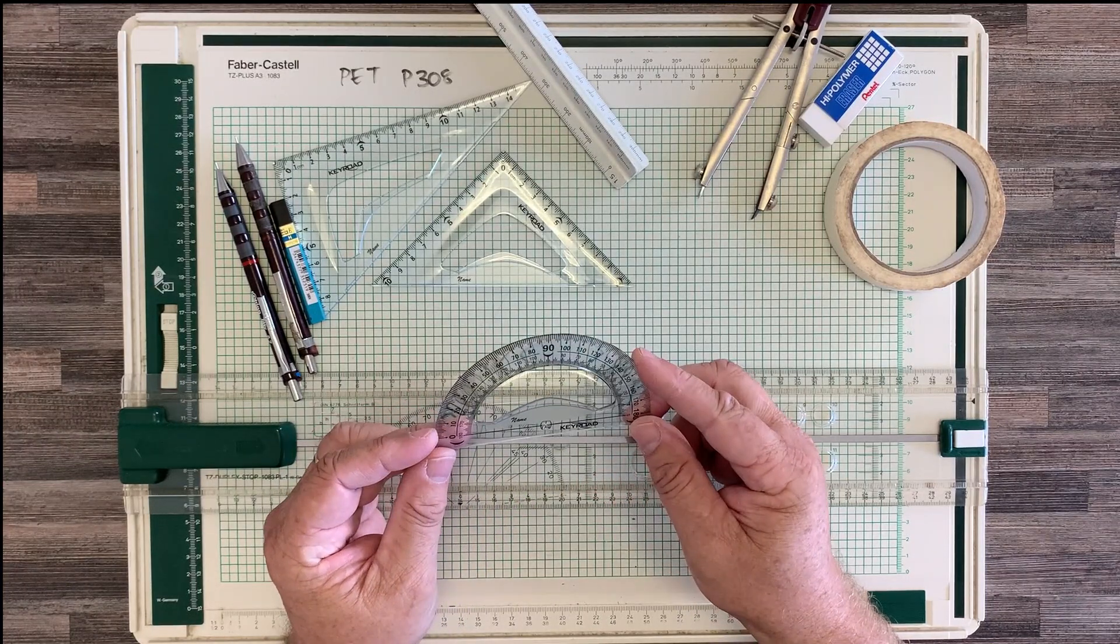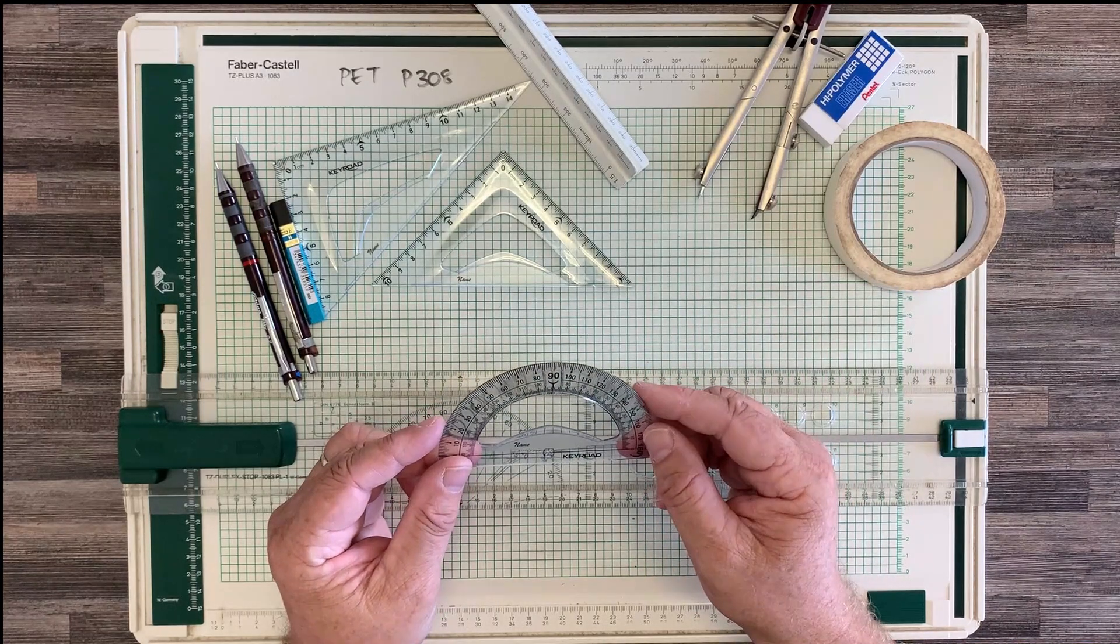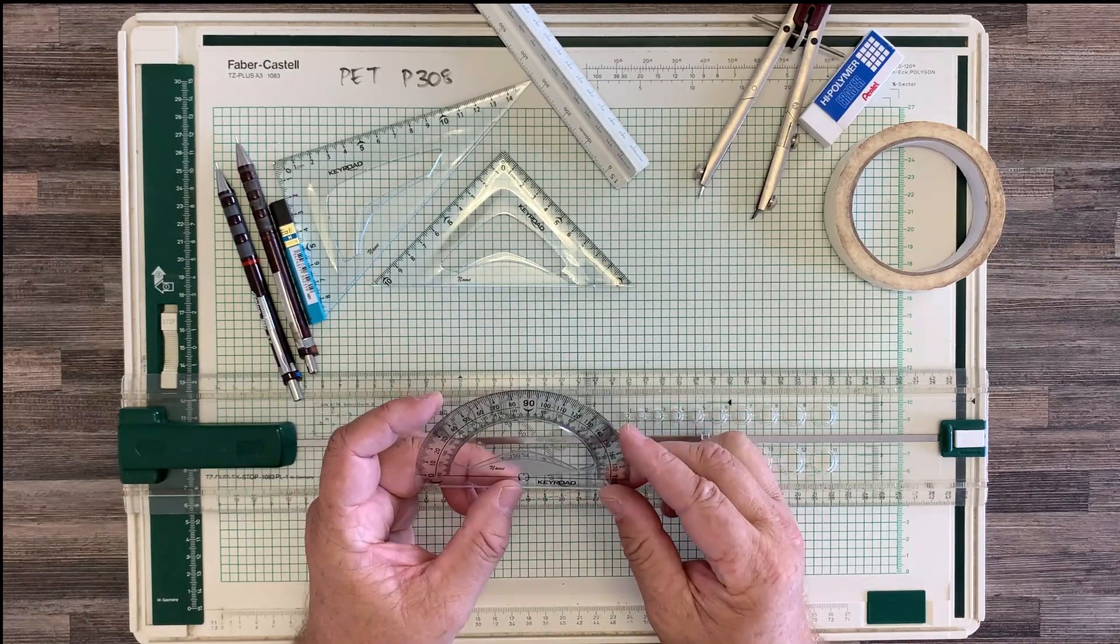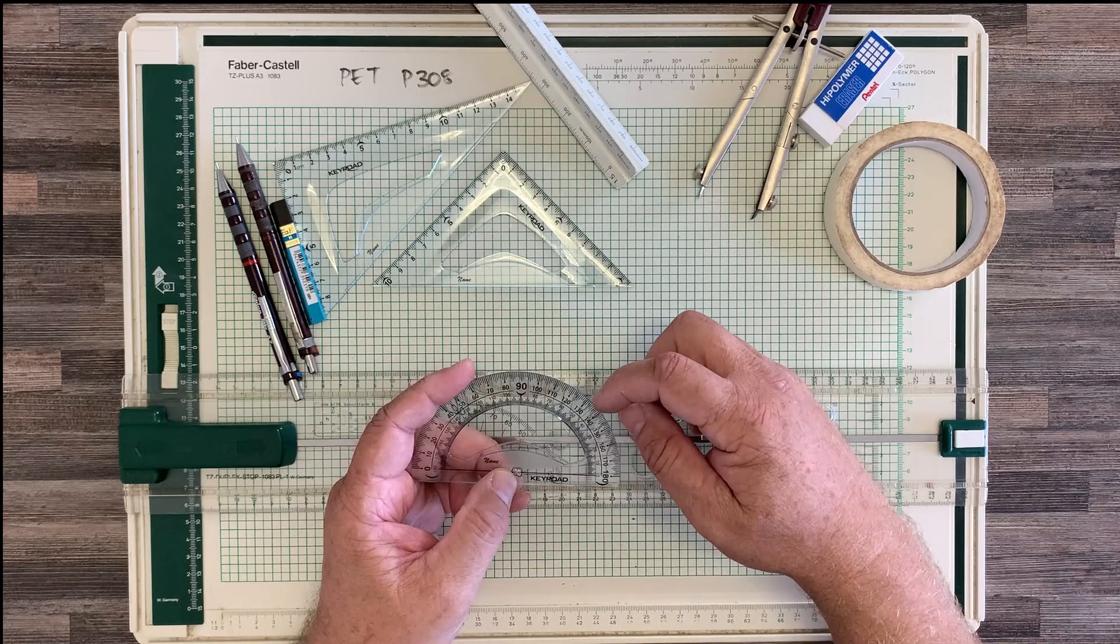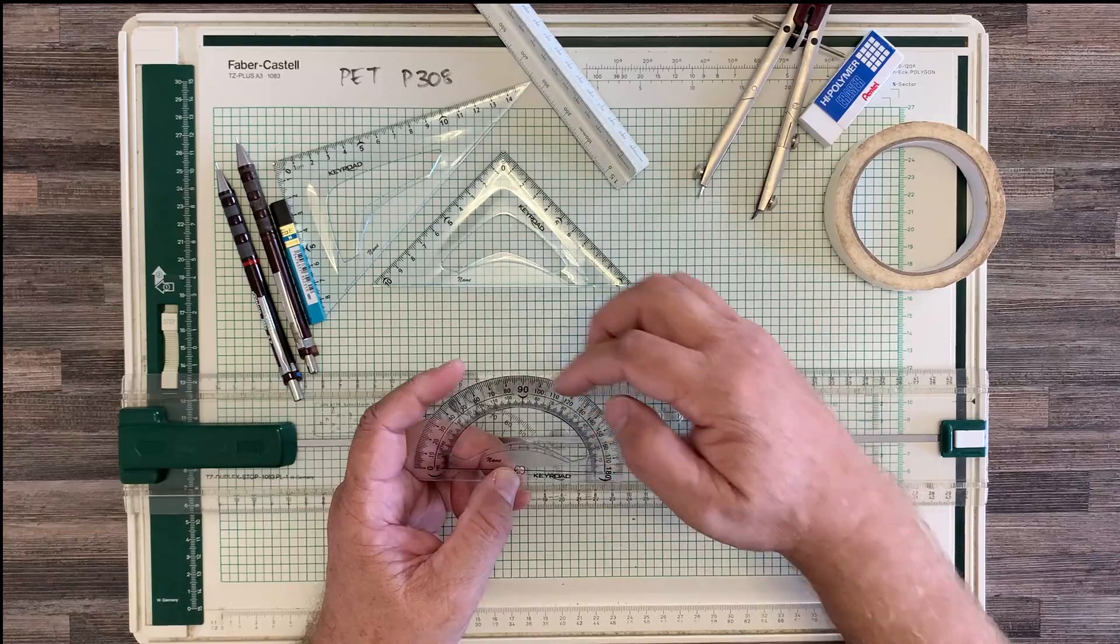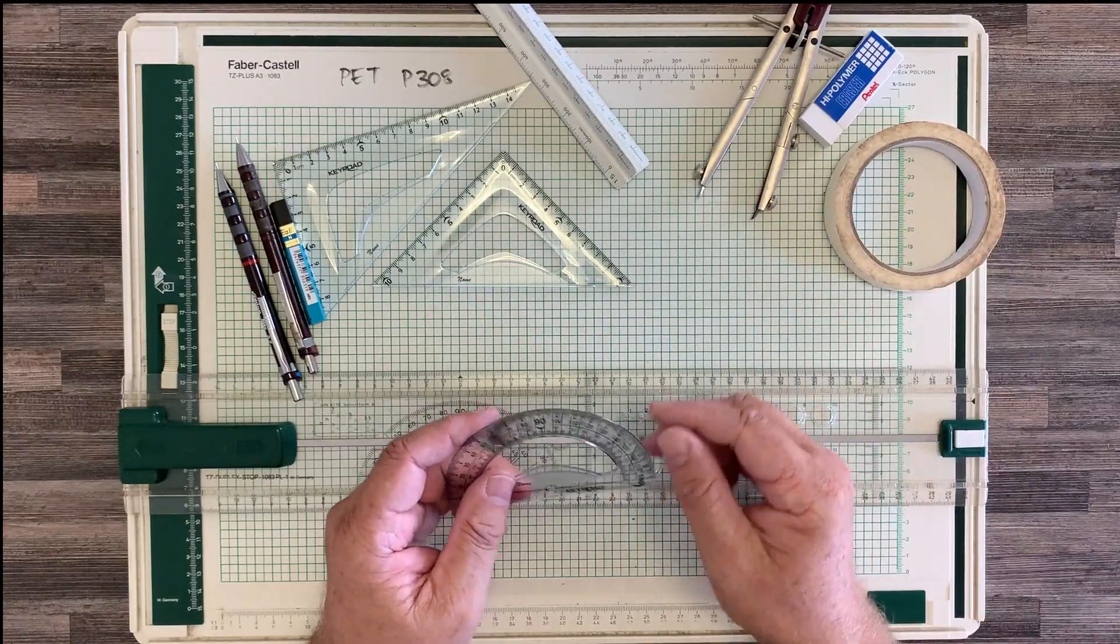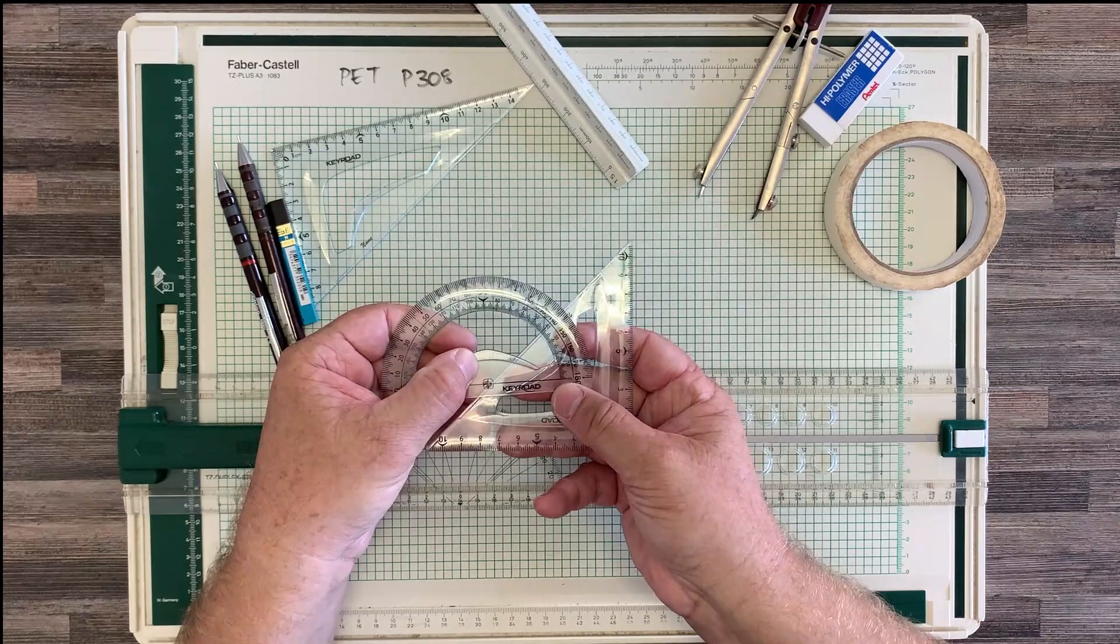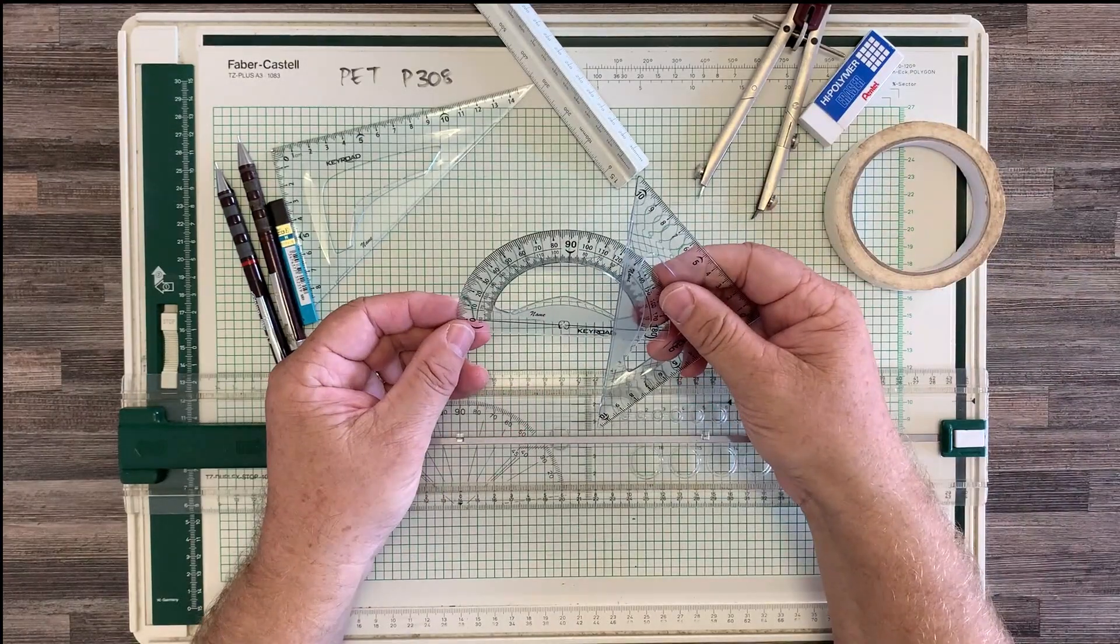A protractor is designed to measure angles and to allow you to draw angles at any particular angle that you would like. So you've got a center point there that you put on the vertex of your angle. You line it up with the horizontal, and then from there you measure off on the inside or on the outside if you're measuring from the other side. You can measure off your degrees and then you draw in, join the dots, and you can get a measurement of any angle. So there's 40 degrees, for example, or 30 degrees or 20 degrees.